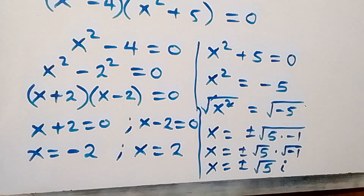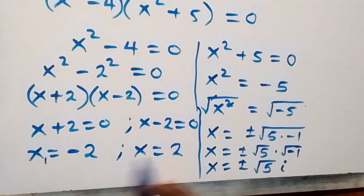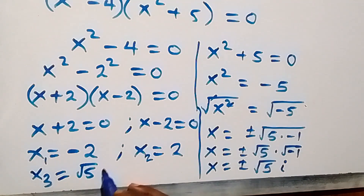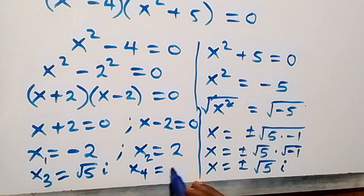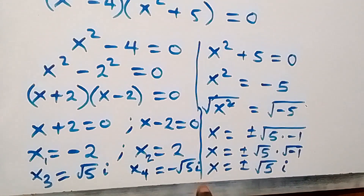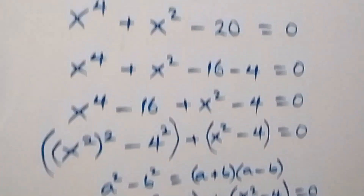So we have four solutions in total. From the first case we have x₁ equals positive 2 and x₂ equals negative 2. From the second case we have x₃ equals positive root 5 i and x₄ equals negative root 5 i. Let's now check to see if these solutions satisfy the given problem.